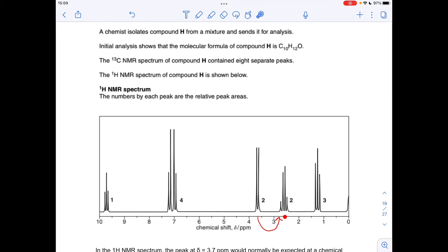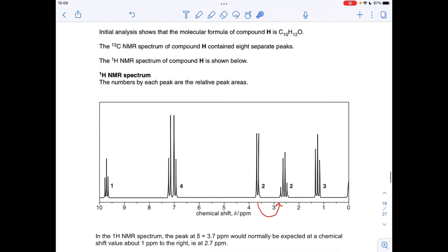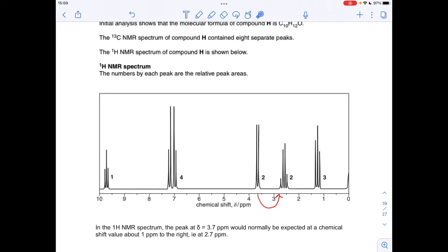You'll notice I've done this with this signal here, and we're told, just on the bottom there, the peak at delta 3.7 ppm, so this one here, would normally be expected around 1 ppm to the right. Obviously, you can see why they've done that, because they would have just crashed into each other. So we'll take each peak in turn. I'll talk through the splitting pattern, the peak area, and the shift.